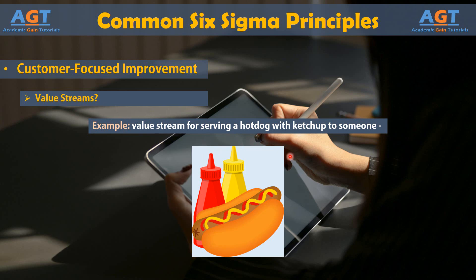The purpose for determining a value stream for a process is that you can identify areas of concern, waste, and improvement. In the above process, are there four different people putting the hot dog together and serving it, or is one person doing all four of those tasks? Is the supplier a single grocery store, or are you shopping at various stores and why? Do you get savings benefits to offset the added time spent working with multiple suppliers? These are some examples of the questions you can reveal and answer during value stream mapping.